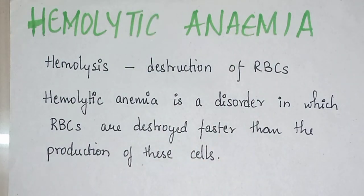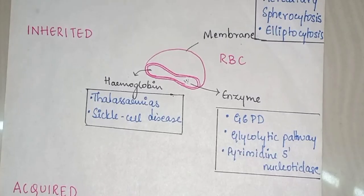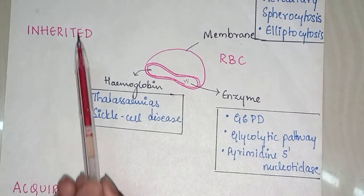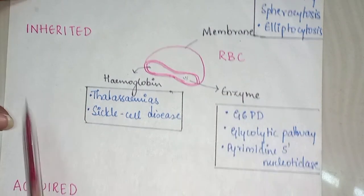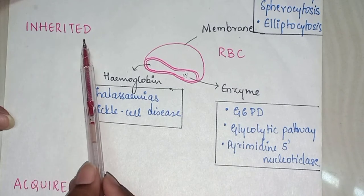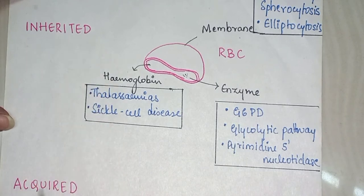Now let's understand the classification of hemolytic anemia based on etiology. There are two causes: it might be an inherited cause or it might be acquired.